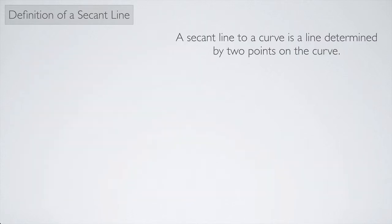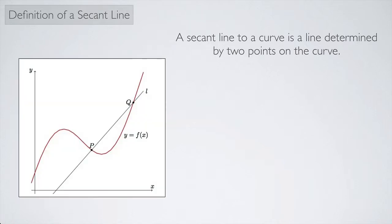So a secant line to a curve is a line determined by two points on the curve. For example, if we have some function and we label two points—maybe a point P and a point Q—and we connect them with a line and call that line l, this line l would be the secant line. And this is the function y equals f of x.